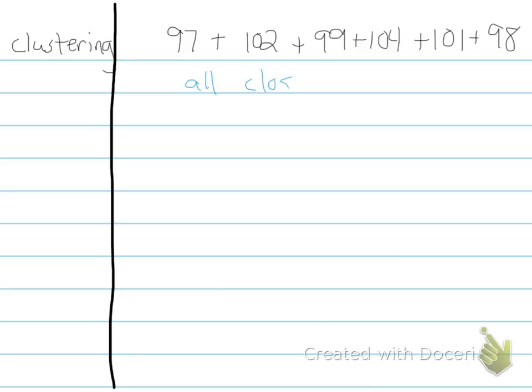The next form of rounding is called clustering. And we do this when all the numbers seem to be around or close to a certain number. For example, if we had 97 plus 102 plus 99 plus 104 plus 101 plus 98, all of these numbers are all close to 100. All of these are close to what number? About 100, right? So they're all close to 100.